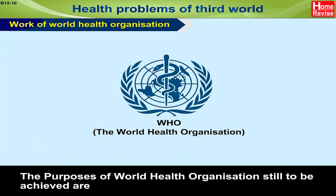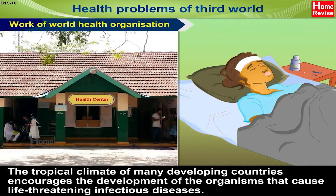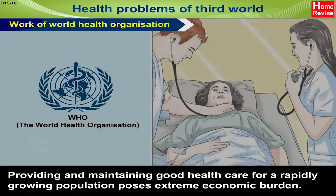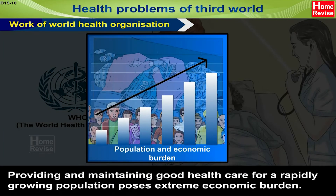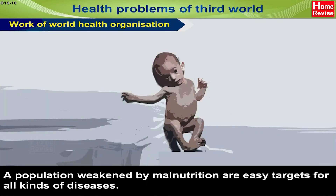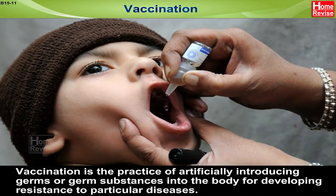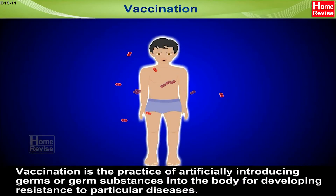The purposes of the World Health Organization still to be achieved include: the tropical climate of many developing countries encourages the development of organisms that cause life-threatening infectious diseases. Providing and maintaining good health care for a rapidly growing population poses an extreme economic burden. A population weakened by malnutrition is an easy target for all kinds of diseases.